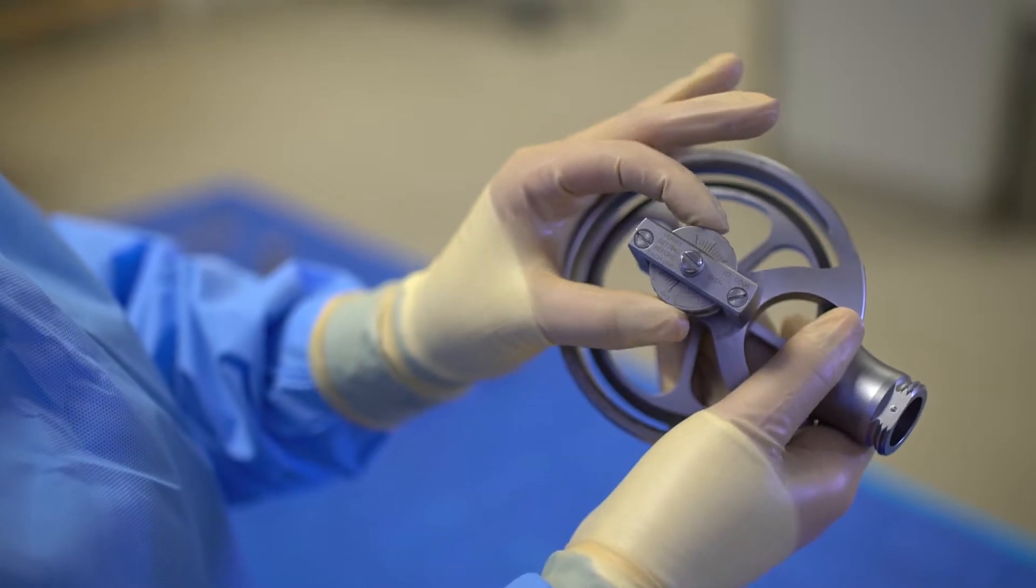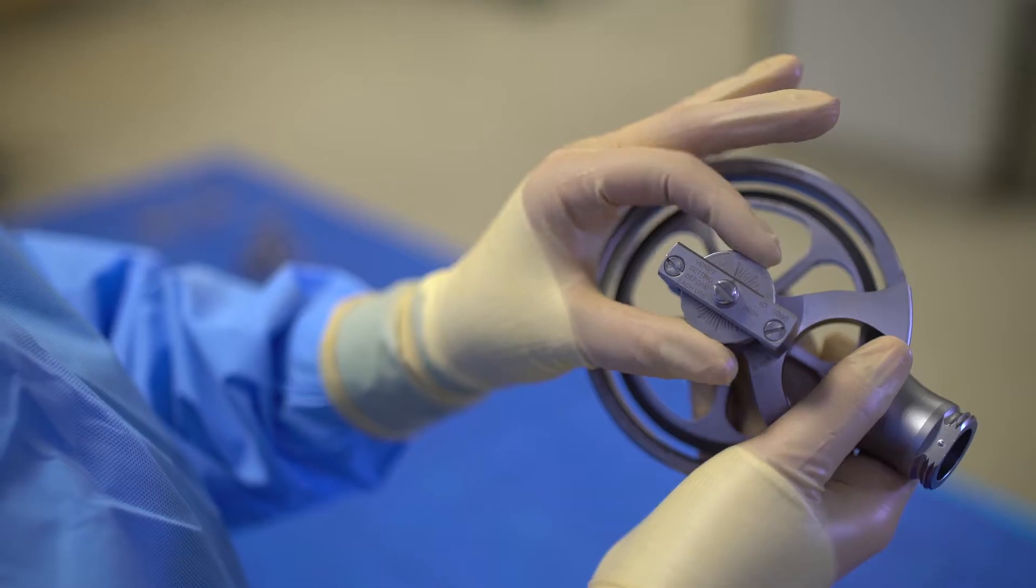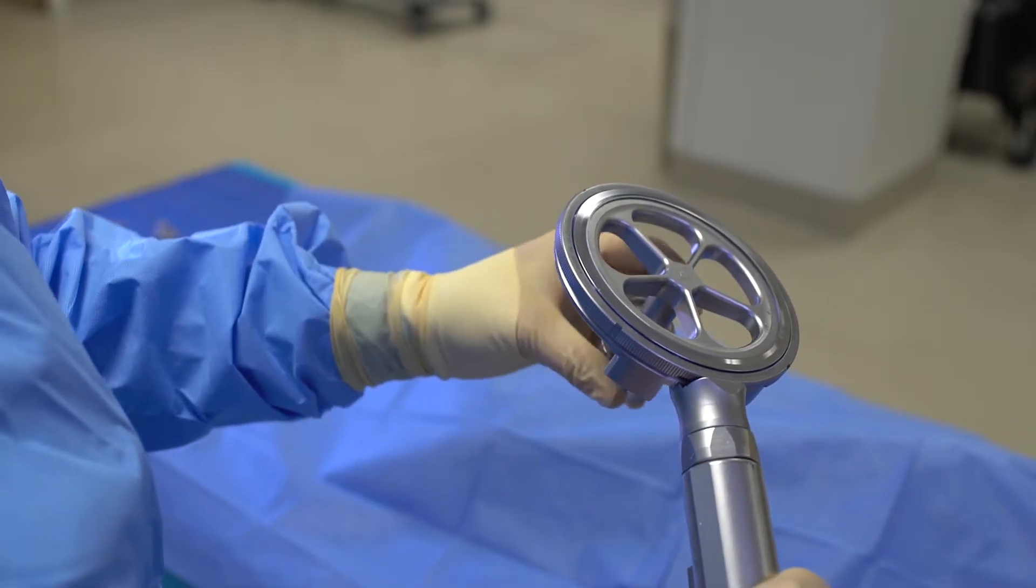Turning it clockwise, or to the right, increases the thickness on the depth gauge. Turning it counterclockwise, or to the left, decreases the thickness on the depth gauge.